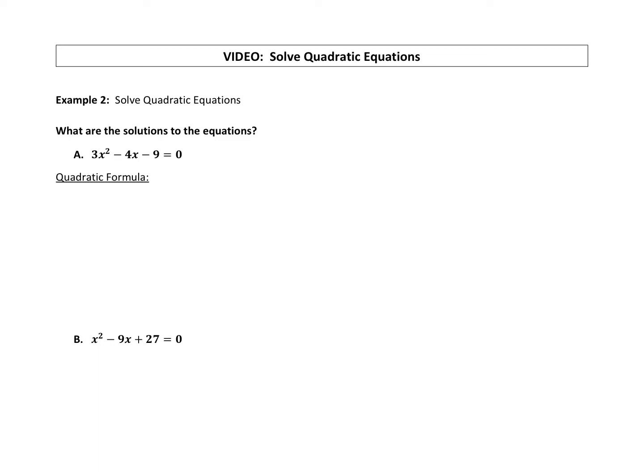All right, do you guys have that quadratic formula song in your head? We're going to put it to use. We're going to solve a couple of equations using the quadratic formula, so let's get the quadratic formula in our notes. It is x equals negative b plus or minus the square root of b squared minus 4ac all over 2a.